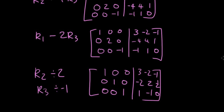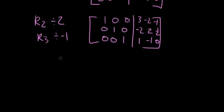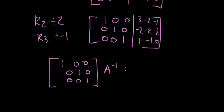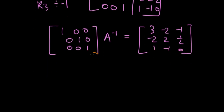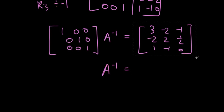Now we can separate this back into the original matrices. The left-hand side is the identity matrix, and the identity matrix multiplied by the inverse of A equals the right-hand side: 3, −2, −1; −2, 2, ½; 1, −1, 0. The identity matrix times anything just gives you that same thing, so we can safely say that A inverse equals this matrix.